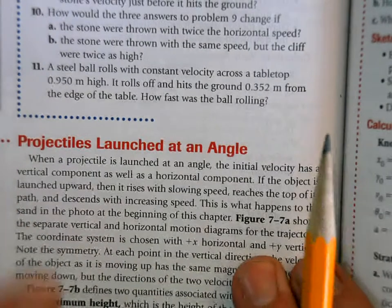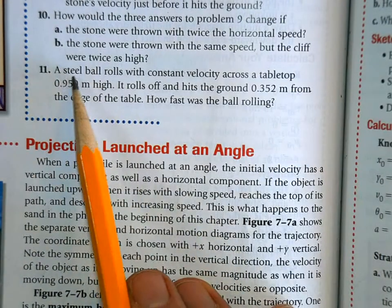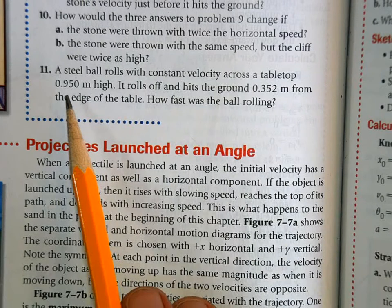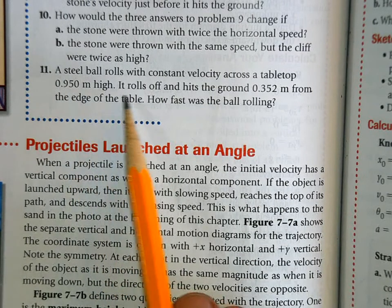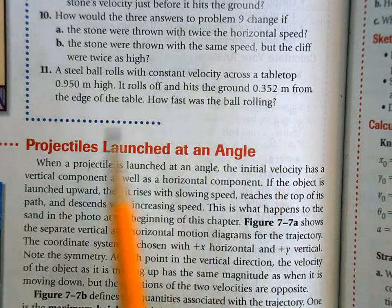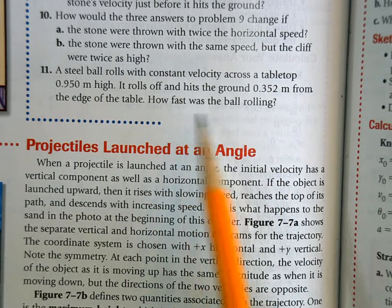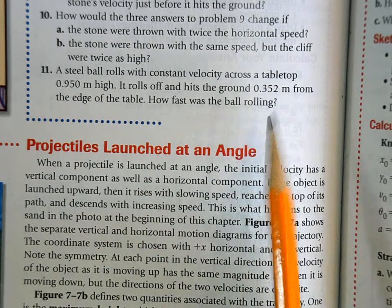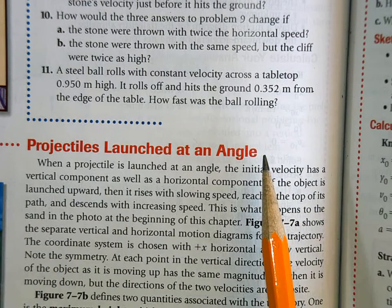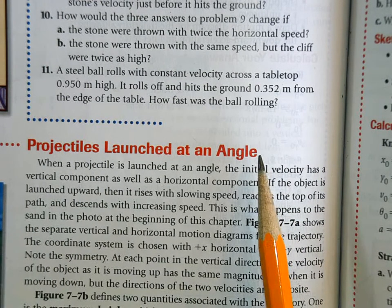So we're going to do problem number 11 here. A steel ball rolls with constant velocity across the tabletop 0.95 meters high. It rolls off and hits the ground at 0.352 meters from the edge of the table. How fast was the ball rolling? And the reason I'm going to make a video of this is because this problem will be on the test, a problem very similar to it.